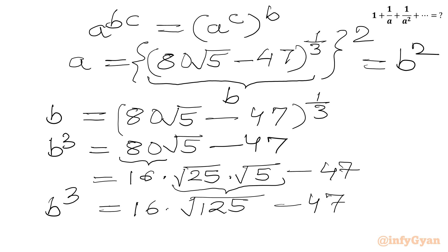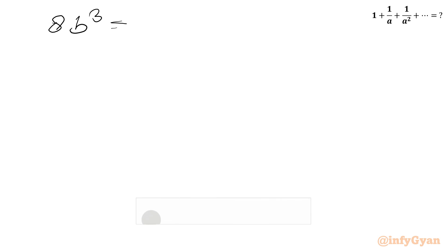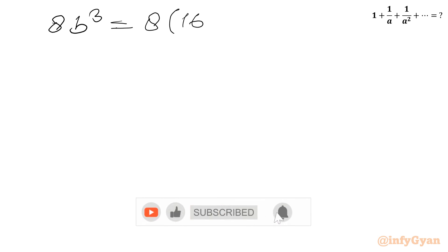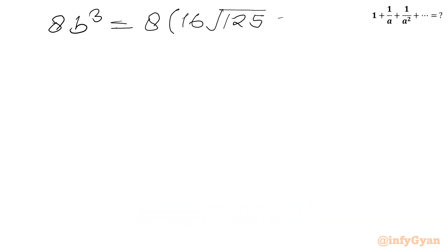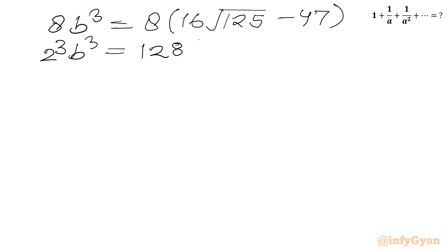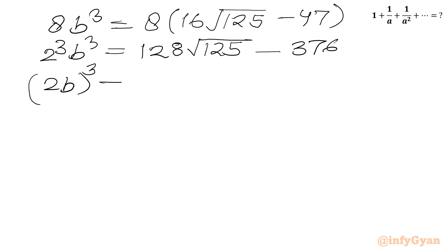Now I will use Simon's favorite factoring trick. I need to multiply both sides by 8. So 8 times b cubed equals 8 times (16√125 minus 47). Since 8 is 2 cubed, the left-hand side becomes (2b) cubed. The right-hand side gives 128√125 minus 376.